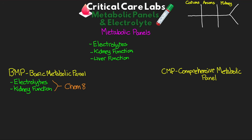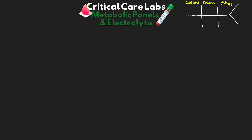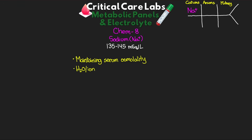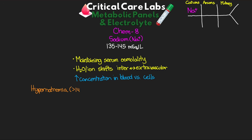So let's get into the tests that make up our CHEM-8. The first one is going to be our sodium, found at the top of our first column — the cations column. Normal values for sodium are 135 to 145 milliequivalents per liter. Sodium plays an important role as a major extracellular ion involved in maintaining serum osmolality and water ion shifts between our intravascular and extravascular spaces. It is found in higher concentrations in the blood than in our cells.